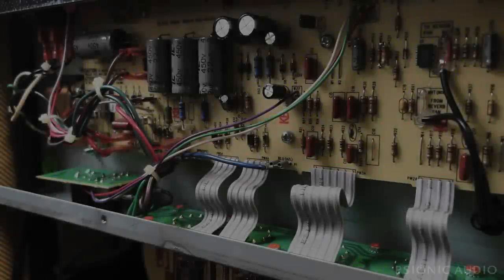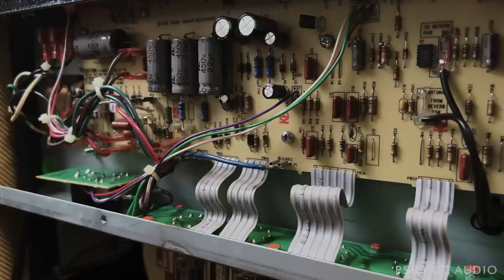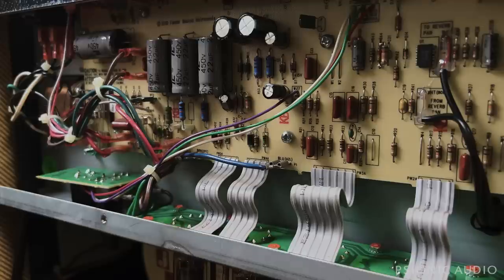Got a fairly standard Blues Junior here with fairly standard problems. When it came in, the mains fuse was blown. I changed that out and powered it on my current limiter, and you got to see this.